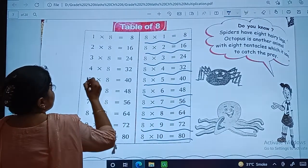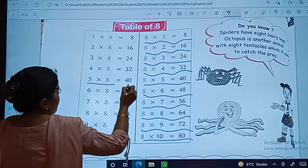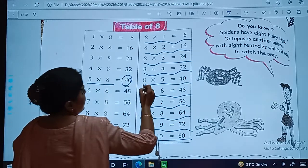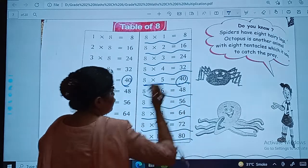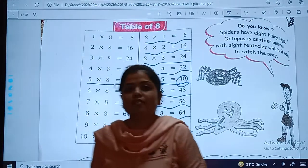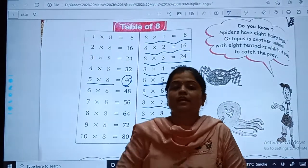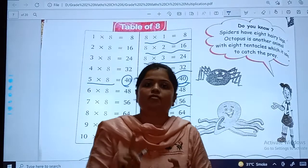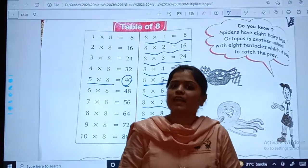Same way, 5 multiplied by 8, answer is 40. Or 8 multiplied by 5, answer is 40. So here we did two things. We repeated the property and we learned the table of 6, 7, and 8.